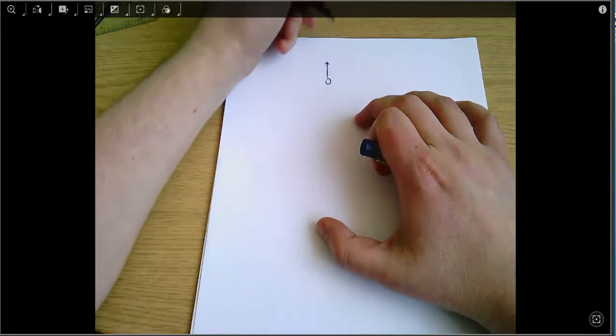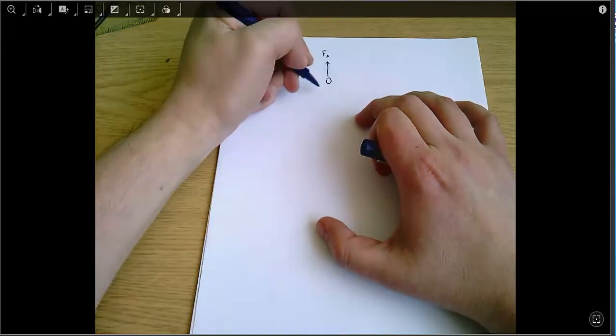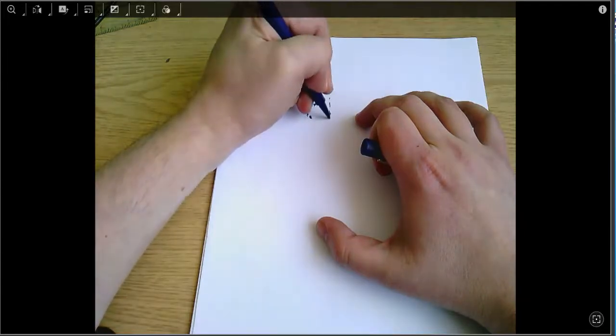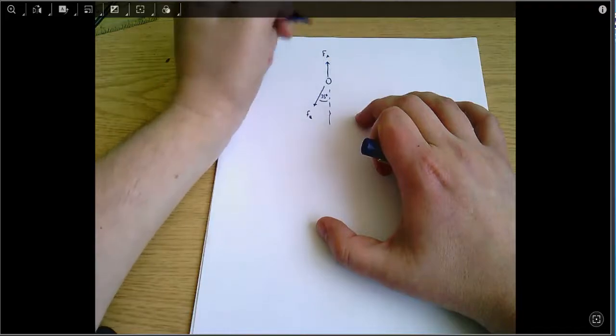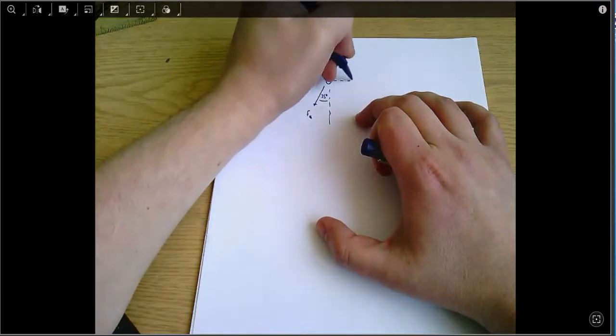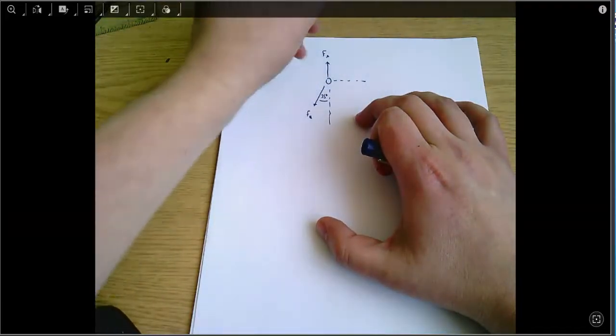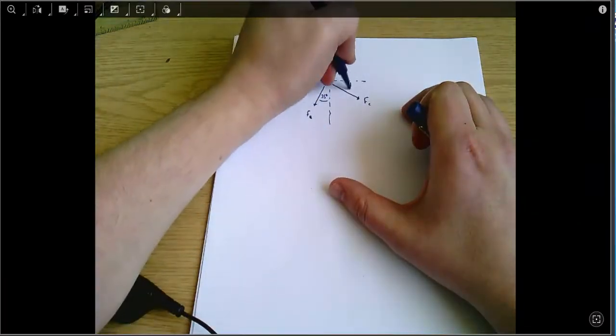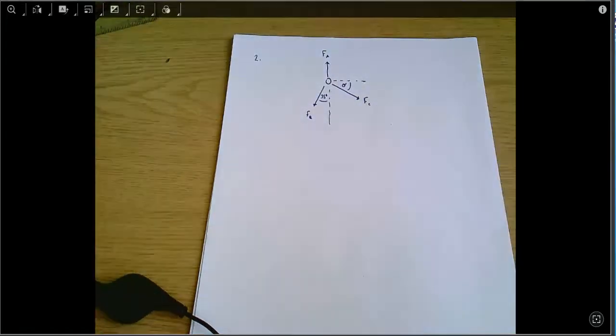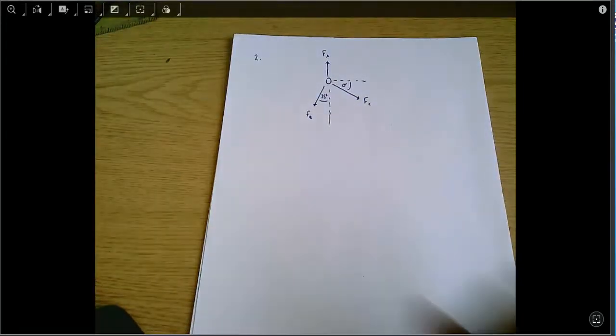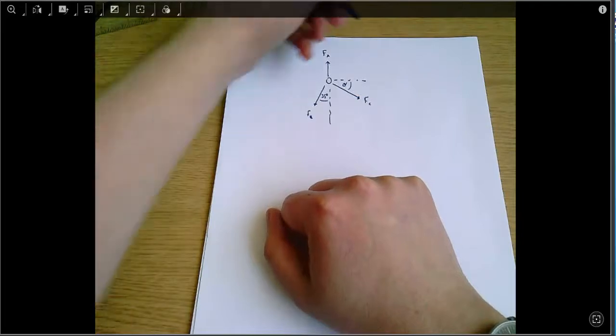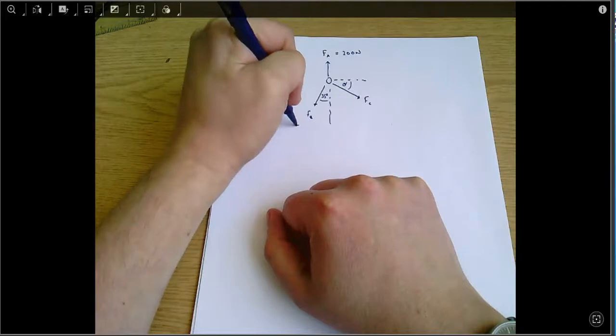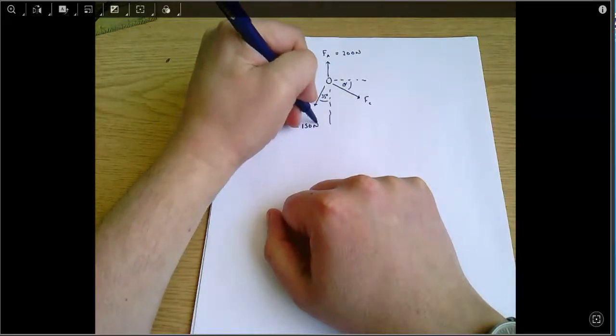We've got some force FA acting upwards, some force FB acting just to the left of downwards. That angle there we're told is 35 degrees. And we've got another force FC and we don't know the angle for FC. And we're told FA equals 200 newtons and FB equals 150 newtons.